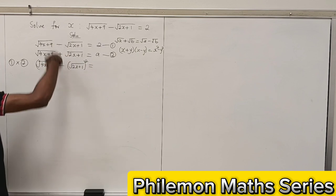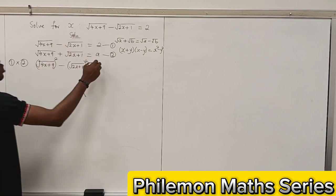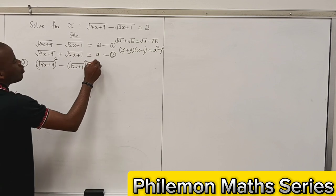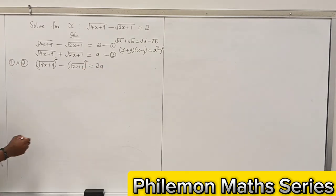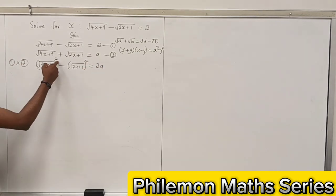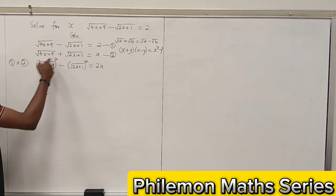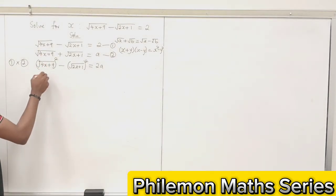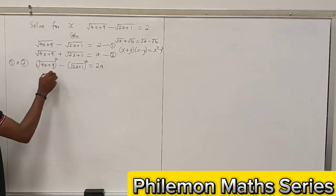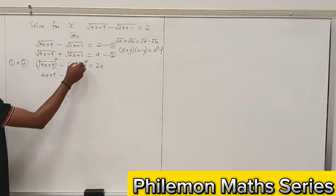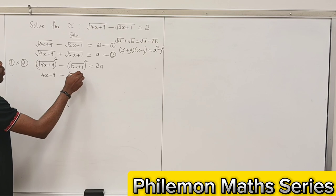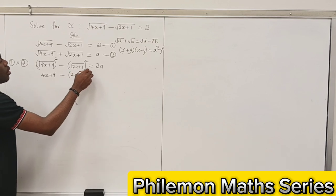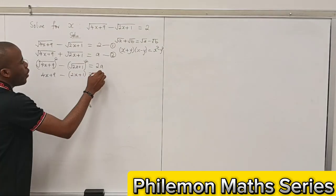Remember, we are multiplying both sides, so we'll have 2a. Now, to open the bracket, this square root will take care of the root sign. We'll have 4x plus 9. Likewise, this 2x plus 1 equals 2a.